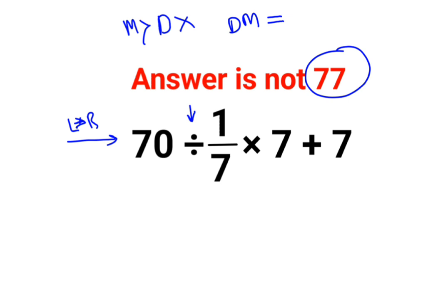How do we do this? In order to do division, you need to follow the rule of KCF. K stands for keeping the first number as it is. C stands for changing the division sign to multiplication. F stands for flipping or taking the reciprocal of 1/7, which is 7.